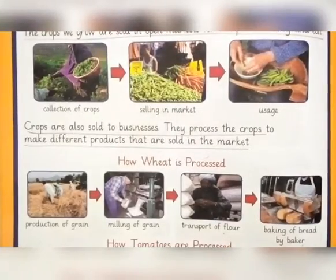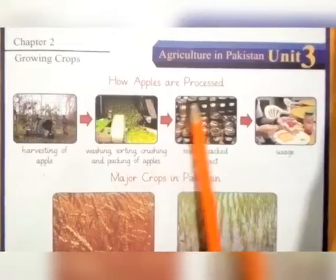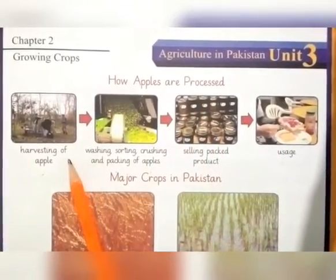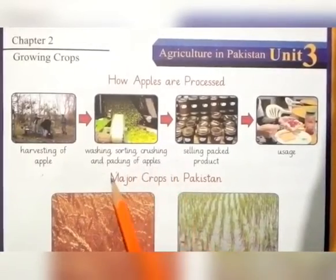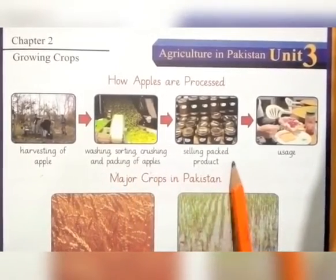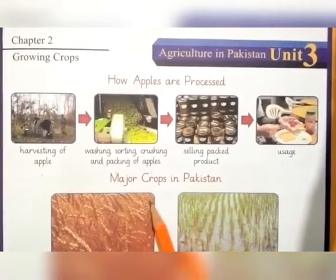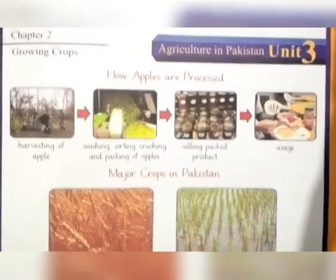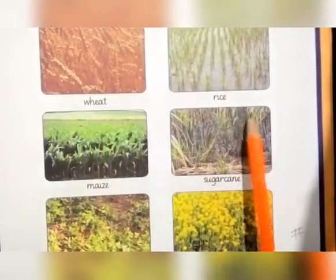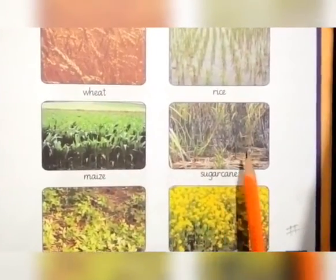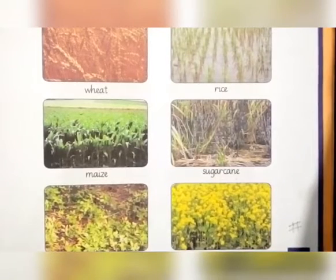How apples are processed: harvesting of apples, washing, sorting, crushing, and packing of apples into sealed pack products for usage. The major crops in Pakistan are wheat, rice, maize, sugar cane, groundnut, and mustard. These are the major crops of Pakistan.